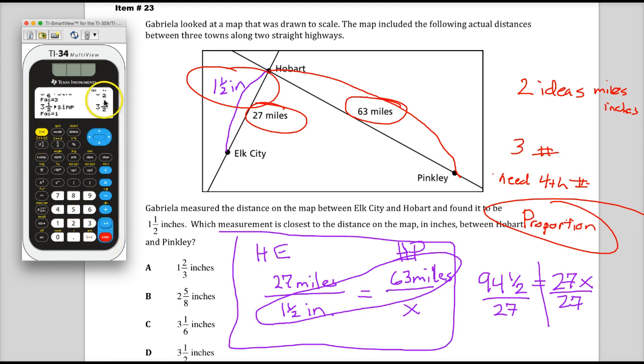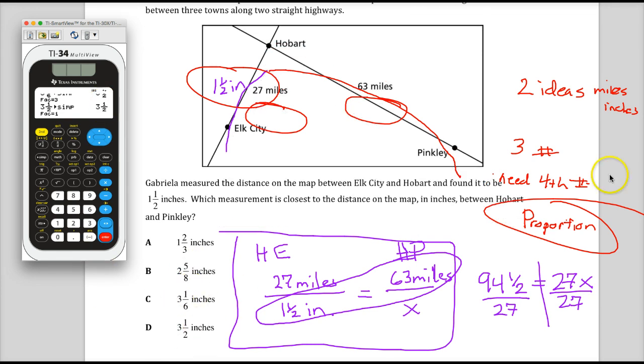So I had 3 and a half. Now I have 3 and a half. That means it's simplified all the way down as far as it's going to go. So I am good to go. And I can say my answer is D. 3 and a half inches.